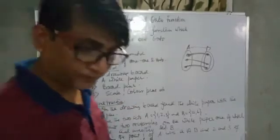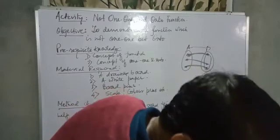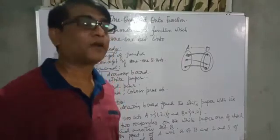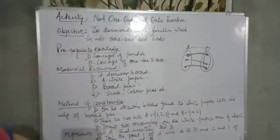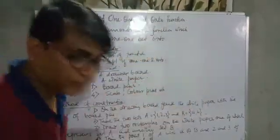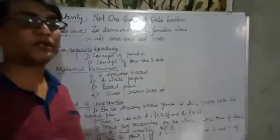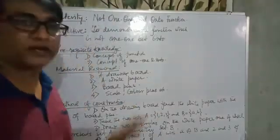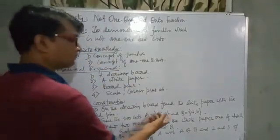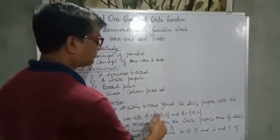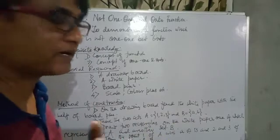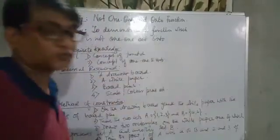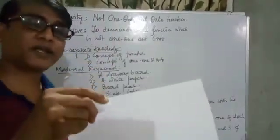For the method of construction, on the drawing board we will fix the white paper with the help of board pins. Then we take two sets: set A contains elements 1, 2, 3 and set B contains elements small a and small b. On the white sheet, draw two rectangles — one representing set A and another representing set B.